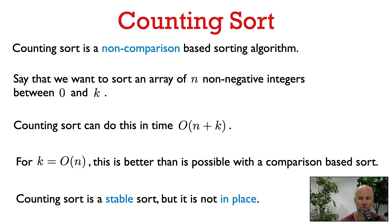You can show a lower bound for comparison-based sorting algorithms — any comparison-based sorting algorithm has worst-case complexity Omega(n log n). So counting sort can actually beat that lower bound by not being comparison-based. Another key property of counting sort is that it is a stable sort, which will be important in the next video when we use counting sort as a component of radix sort. A disadvantage of counting sort is that it is not an in-place algorithm — we need extra memory proportional to n plus k.